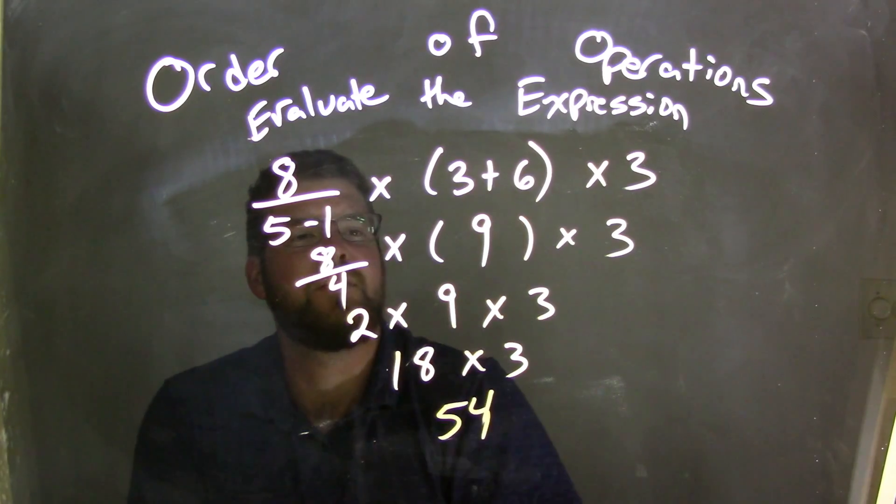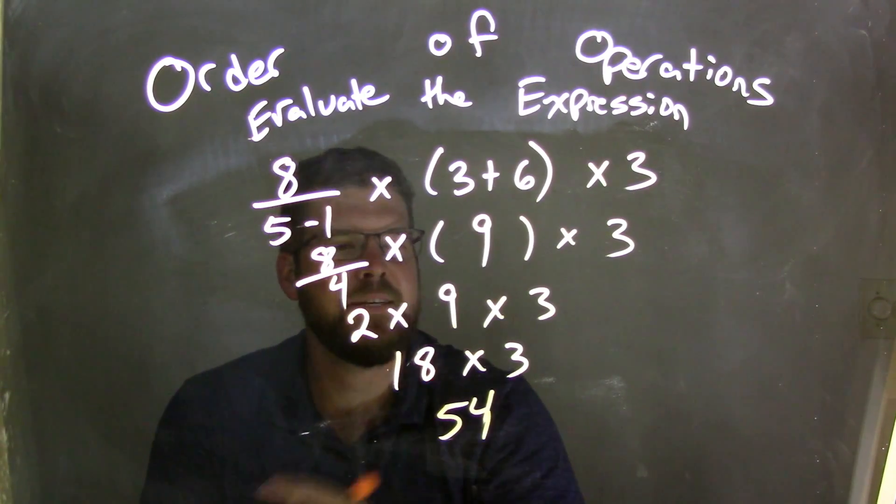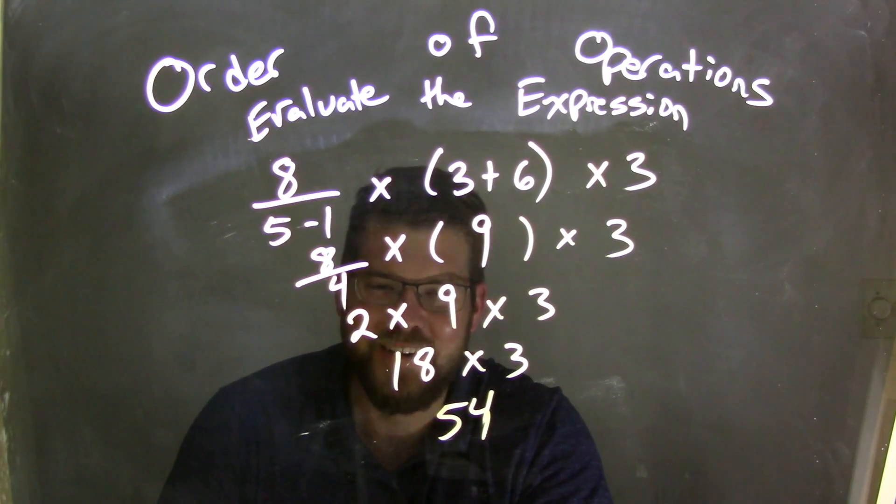again, simplify here. 3 plus 6 is 9. Okay? And 8 over 5 minus 1 comes out to be that 4. That's 5 minus 4. 8 over 4 is that 2. 2 times 9 is 18. 18 times 3 is 54. Not 36, but 54.